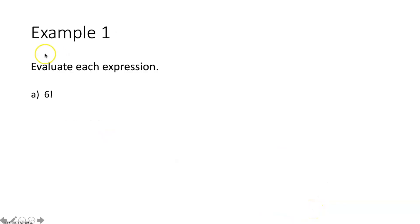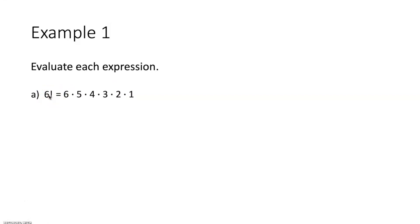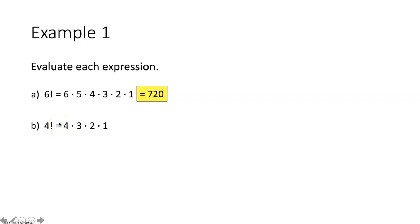Example one: evaluate each expression. Part A — six factorial. We take six and multiply it by every natural number less than that: six times five times four times three times two times one, giving six factorial equals 720. Part B — four factorial: four times three times two times one equals 24.